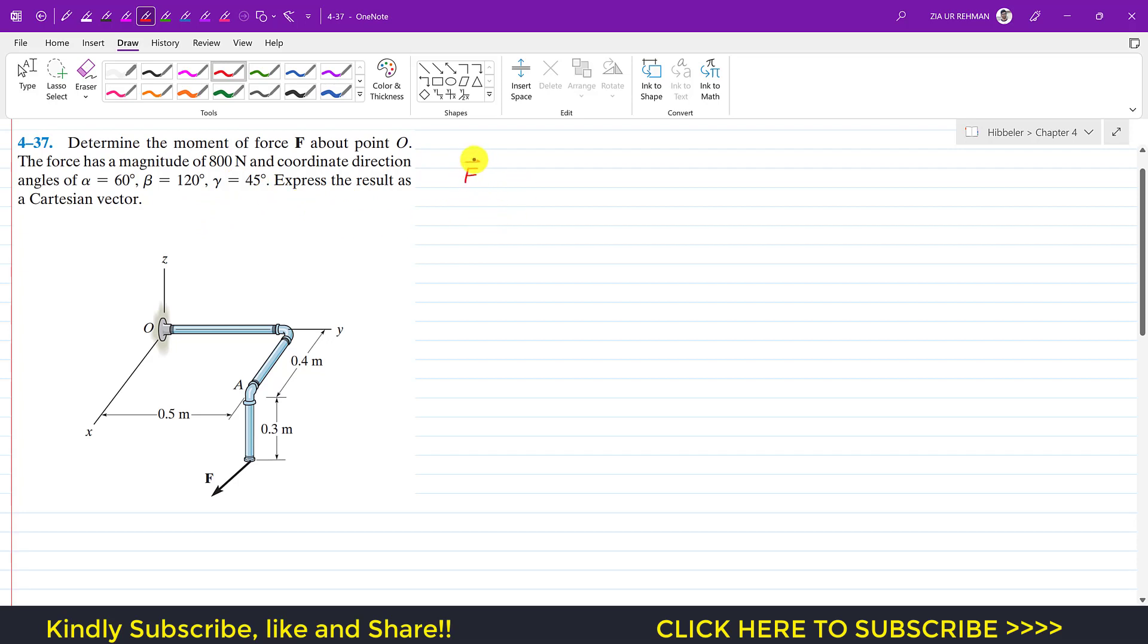First of all, we are given the force F in terms of alpha, beta, and gamma, the coordinate direction angles. So we can say that F vector is equal to F cos(alpha) i plus F cos(beta) j plus F cos(gamma) k.